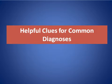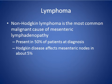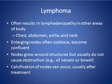Some clues for the differential diagnosis of common causes. Lymphoma: non-Hodgkin lymphoma is the most common malignant cause of mesenteric lymphadenopathy, present in 50% of cases. Hodgkin disease affects the mesenteric lymph node in about 5% of cases.